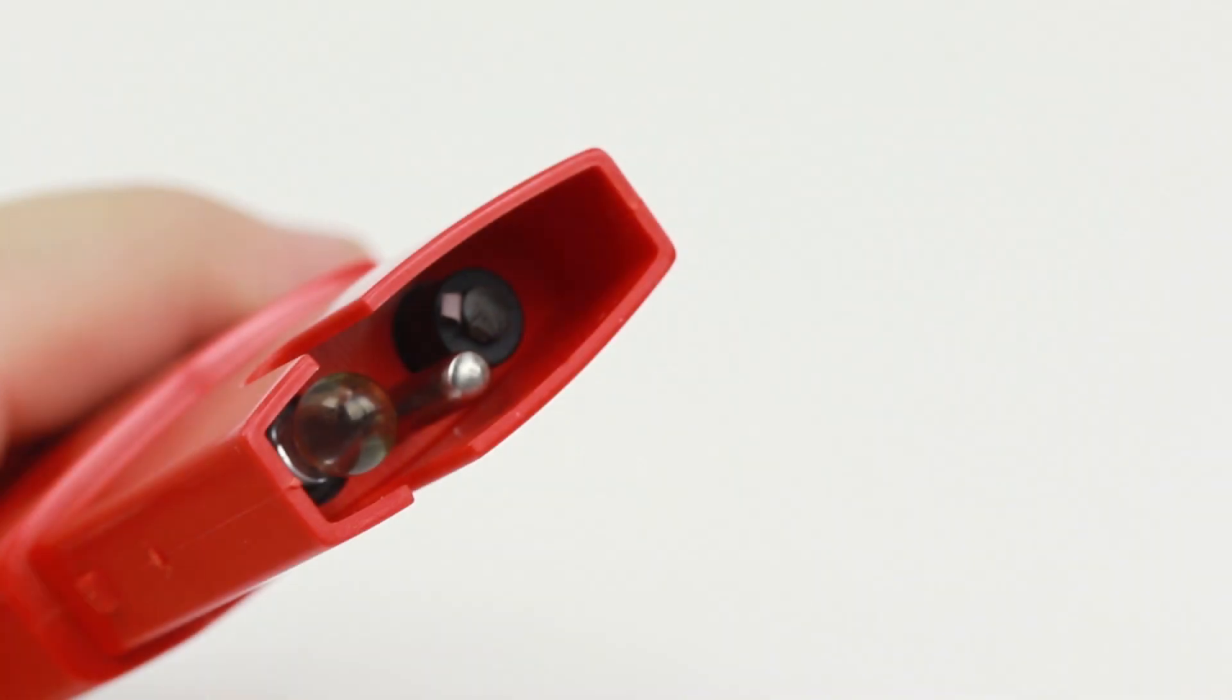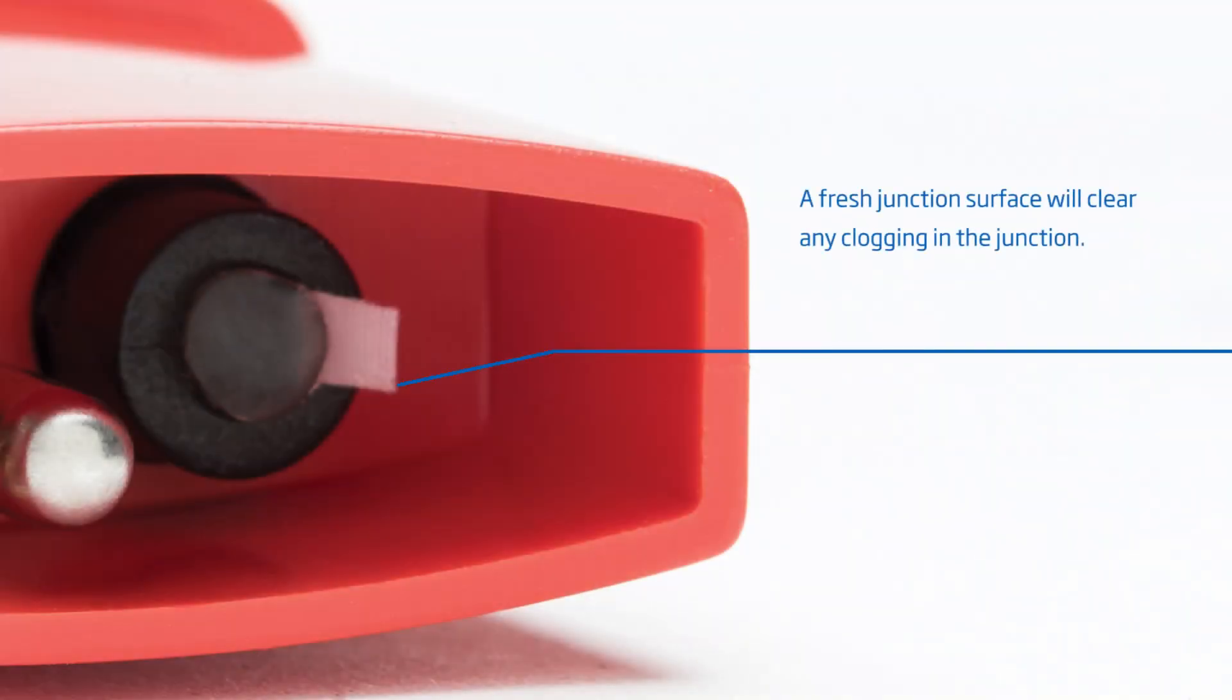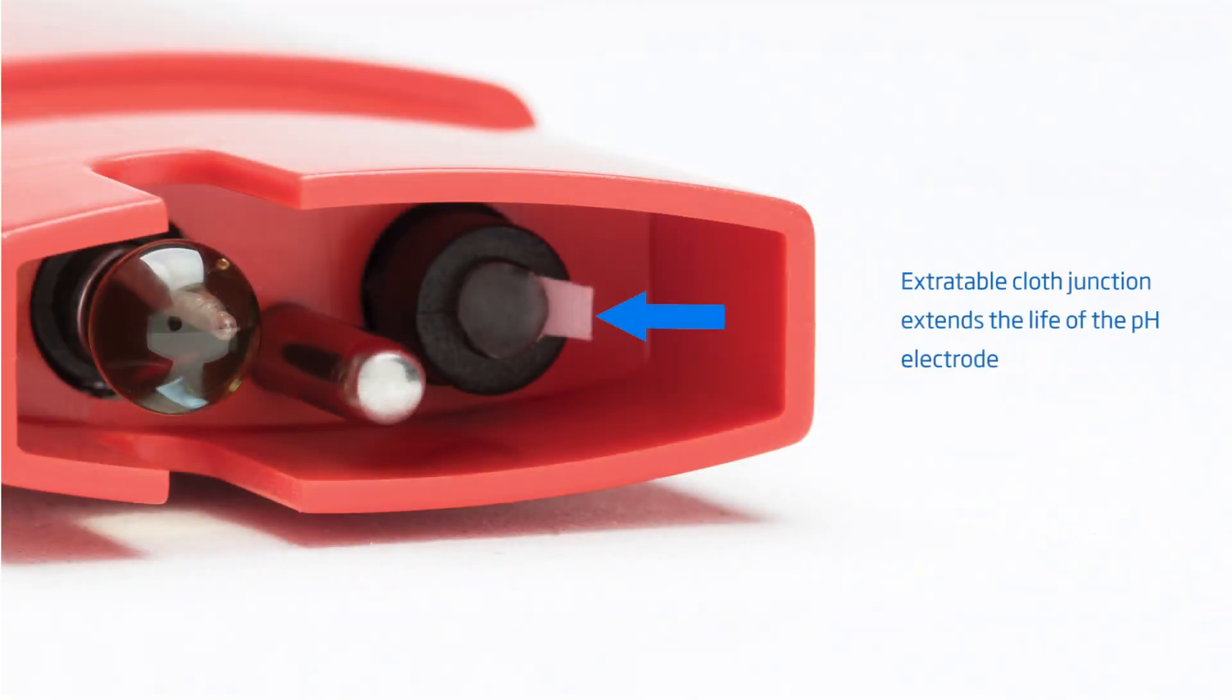Looking at the sensor portion of the meter, the pH electrode, temperature probe, and cloth reference junction can be seen. The cloth reference junction is extractable. When there is a stability issue with the readings, the junction is pulled one-eighth of an inch from the meter to expose a fresh surface. The extractable cloth junction offers a great benefit in extending the life of the pH electrode.